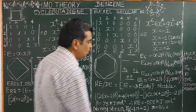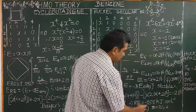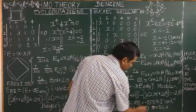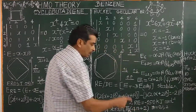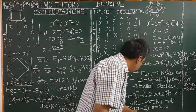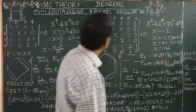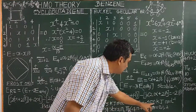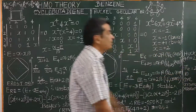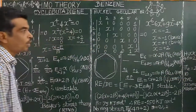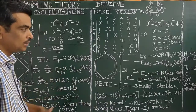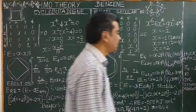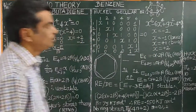Huckel's 4n+2 rule: n equals 0, 1, 2, 3, etc. If n equals 0, there are 2 pi electrons — an aromatic compound. If n equals 1, there are 6 pi electrons — benzene with 6 pi electrons. Adding 2 more gives the next aromatic system. Such cyclic conjugated compounds are aromatic and show aromatic behaviour.